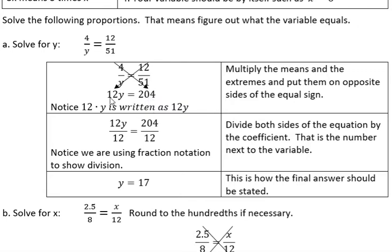Now that we have that written as the means equal the extremes, the next thing is to divide both sides of the equation by the coefficient. The coefficient in this problem is 12. That's the number that's next to the variable. So I take that and I divide both sides by 12.